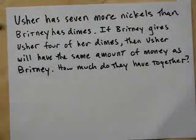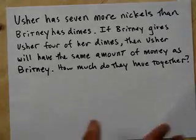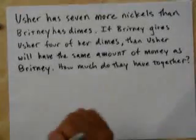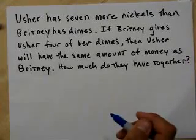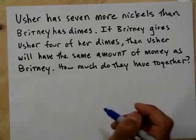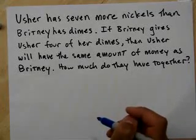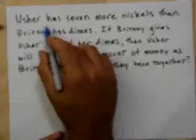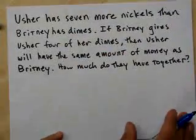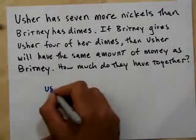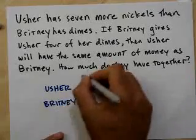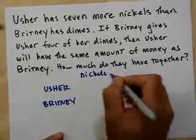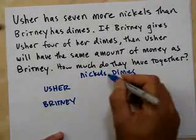And we'll just do one more. Last problem. Let's do it. Usher. You know he carries around nickels. Usher has 7 more nickels than Brittany has dimes. If Brittany gives Usher 4 of her dimes, then Usher will have the same amount of money as Brittany. How much do they have altogether? What? Oh my goodness. Well, okay, I don't know. Let's see. Usher has 7 more nickels than Brittany has dimes. So I have Usher. I have Brittany. I've got nickels. I'm just making a chart. I've got dimes. Right?